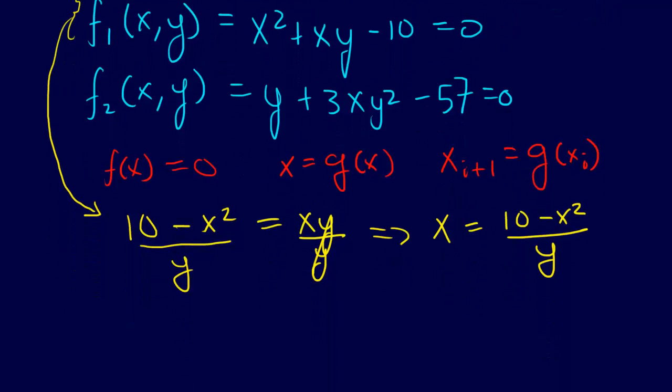Alright, now let's do that for the other equation. I'm solving this for y. I can do this all in one step. I just say y equals 57 minus 3xy squared. Perfect.